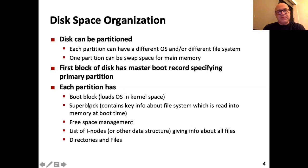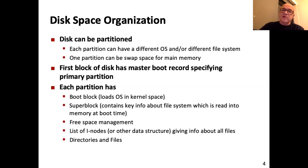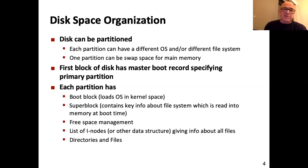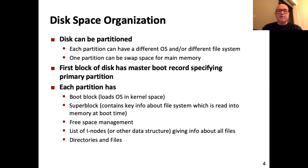Inside each partition we have a boot block, a super block, and then the file-system-specific data. The super block tells us the geometry of the partition: sector size, block/segment size, number of groups, and the start of each metadata block. The super block also contains file-system-specific information such as how free space is managed, data location information, data block mappings, directories, files, and data.